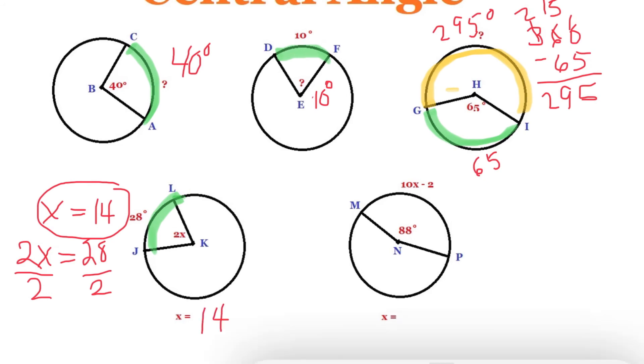Likewise, the central angle is equal to 88, and the arc is 10x minus 2. So if we add 2 to both sides of the equation, 90 equals 10x. We divide both sides by 10, and x is equal to 9.